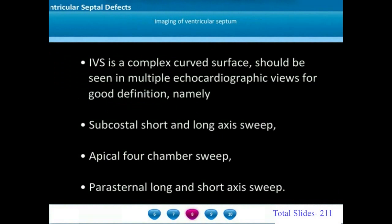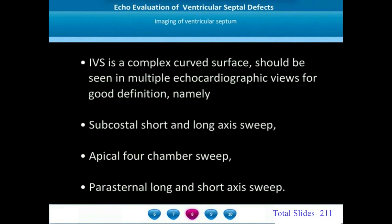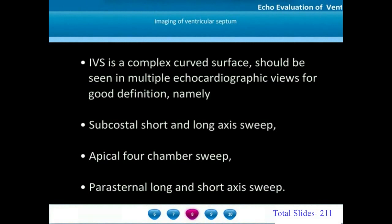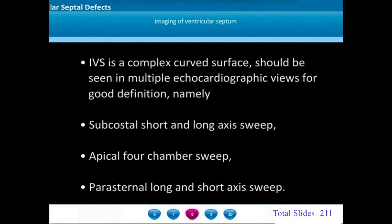Imaging the ventricular septum — a complex curved surface — requires careful assessment using multiple echocardiographic planes to define the location and extent of ventricular septal defects. The commonly used views are subcostal short and long axis sweeps, apical four-chamber sweeps, and parasternal long and short axis sweeps. After assessment in all these planes, we can recreate an en-face view of the septum and show where the ventricular septal defect is located.